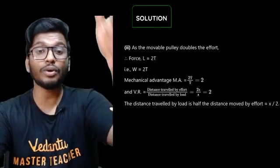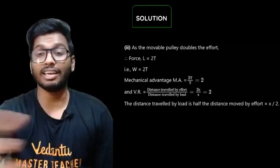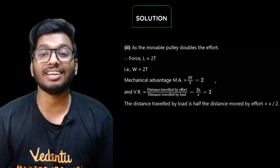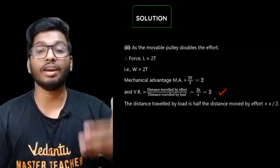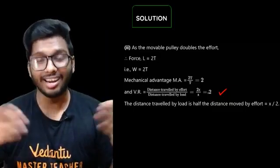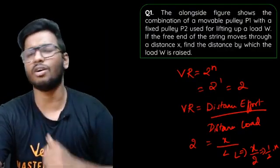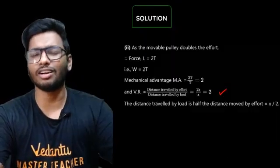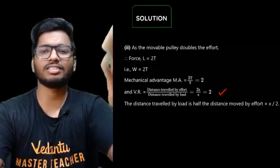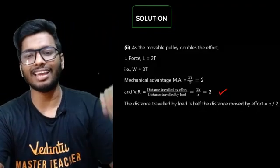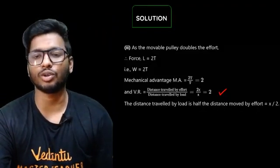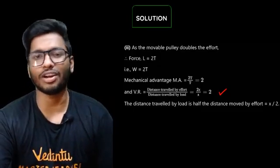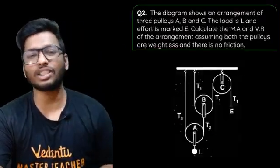You can either use the formula directly or find mechanical advantage first and then find velocity ratio — both approaches give the right answer. The formula 2^n is easy to remember and apply. With that said, moving on to the next question.